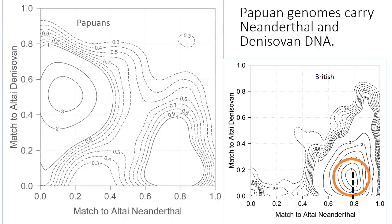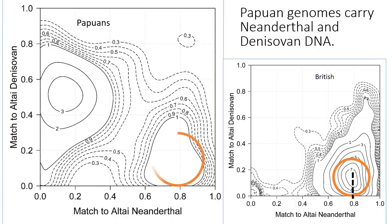Now here is the plot for Papuans. On the right, we have a peak that is similar to that in the British plot, and which also represents Neanderthal ancestry. And on the left, we have a peak corresponding to Denisovan ancestry. However, notice that the rate of matching to the Denisovan genome at the peak is only about 50%, which shows that the Denisovan ancestors of Papuans were much more distantly related to the sequenced Denisovan.